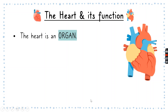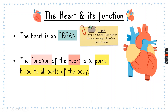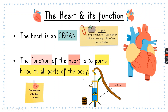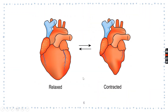We noted that the heart is an organ and the main function is to pump blood to all parts of the body. This is a picture of the heart when it's relaxed — you can see that the muscles are at their original size. And then when it's contracting, you can see that it reduces in size. So when the heart contracts, it exerts a pressure, and that helps to push and pump the blood to all parts of the body.